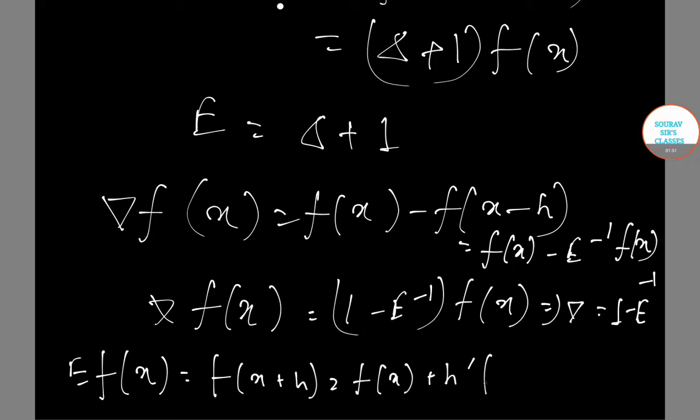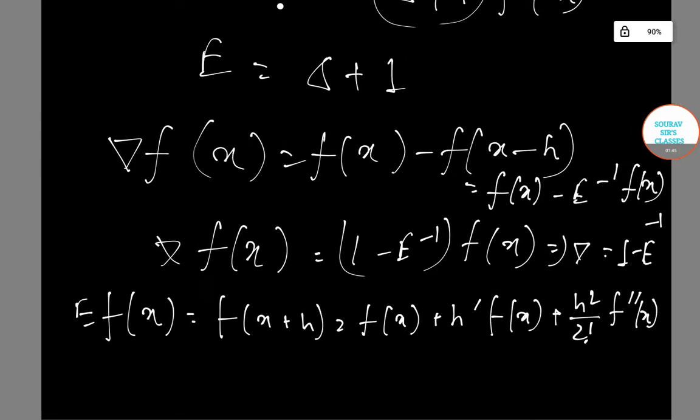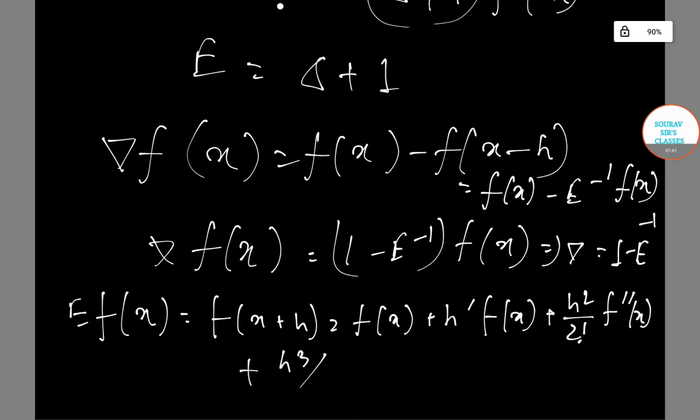Also, E[f(x)] equals f(x+h), which equals f(x) plus h f'(x) plus h squared by 2 factorial f''(x) plus h cubed by 3 factorial f'''(x) plus and so on by Taylor series.